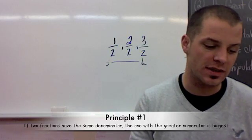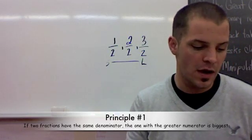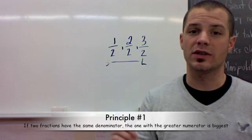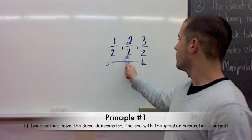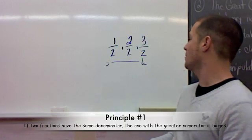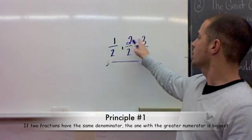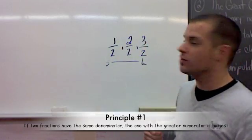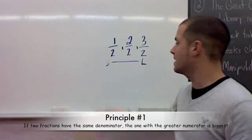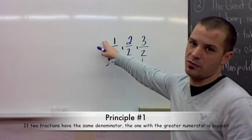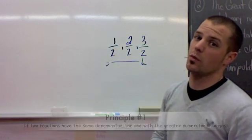if two fractions have the same denominator, the one with the greater numerator is greater. So here we have fractions with the same denominator. So you look at the numerator, and the numerator that's the greatest is the greatest valued fraction. The numerator that is the lowest is the lowest valued fraction. So that's principle number one.